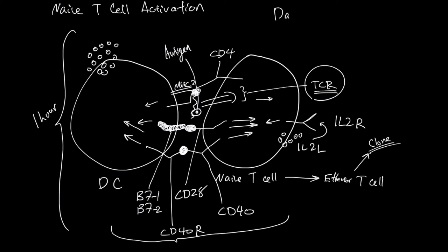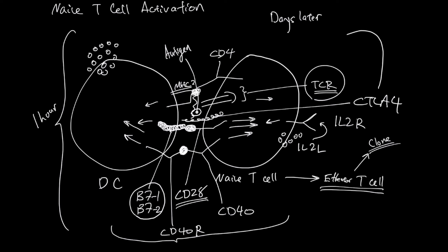Finally, days later, this cell, now an effector T cell, will make another protein called CTLA-4. CTLA-4 outcompetes CD28 for B71 and B72, and the CTLA-4 binding finally turns off all of these positive feedbacks and stimulation signals.